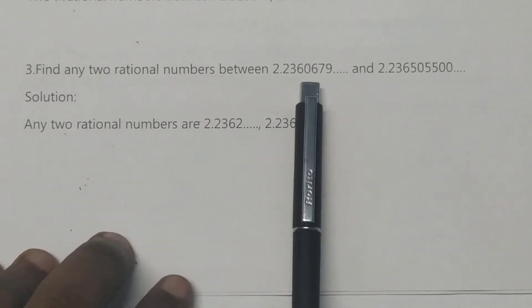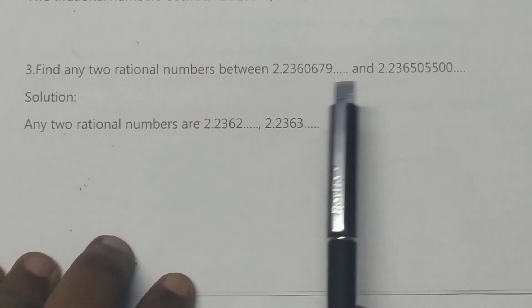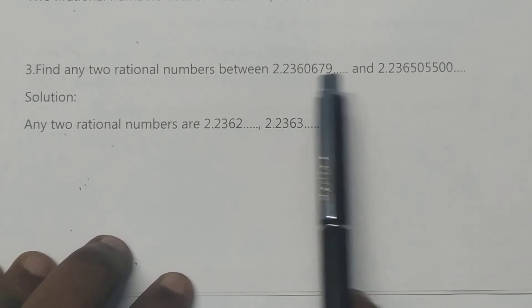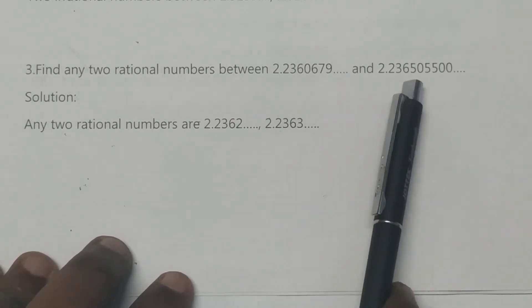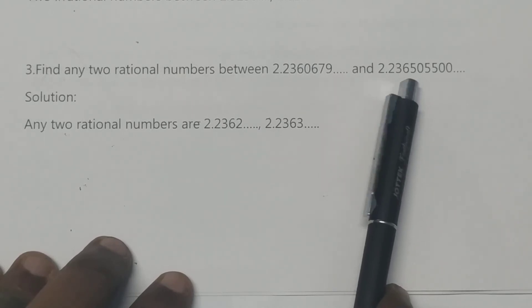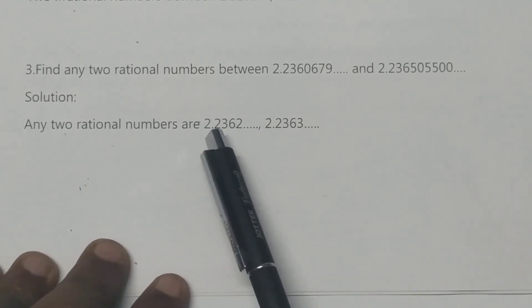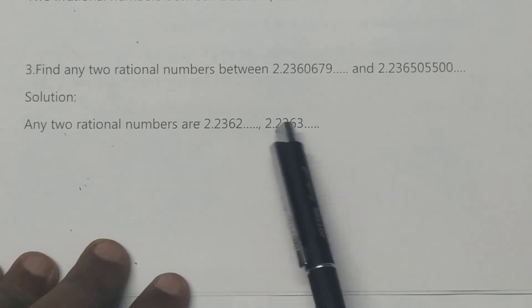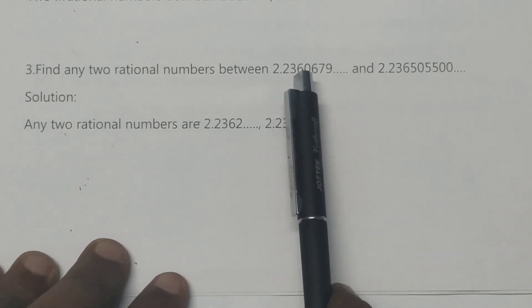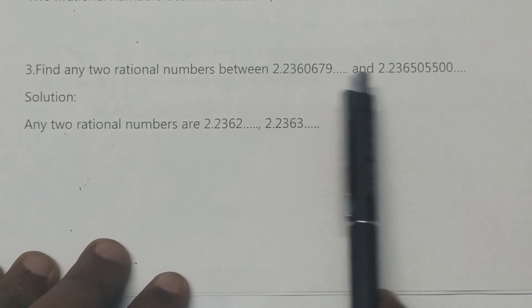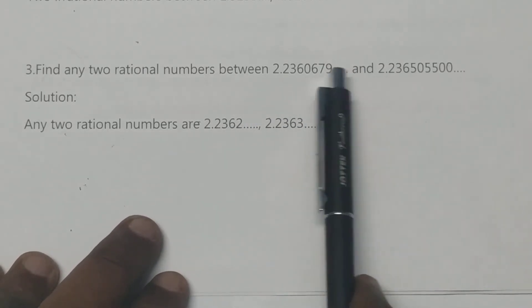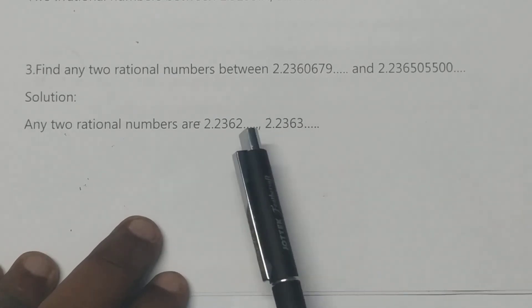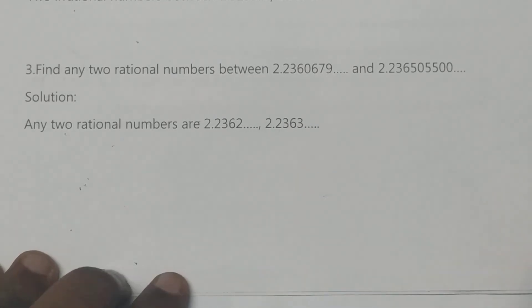Find any two rational numbers between. So, rational numbers — we will shortlist: 2.236. That is, 0, 5, nodule 1, 2, 3, 4. Any two rational numbers are 2.236, 2.236, 3, 4. That is, 2.236 is common, that is 0, 5. Nodule 2.236, 2.236, 2.236 are common.